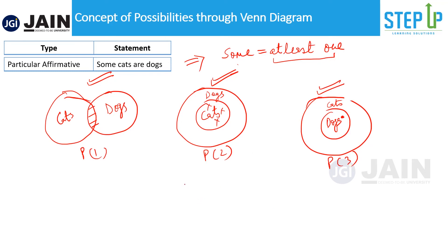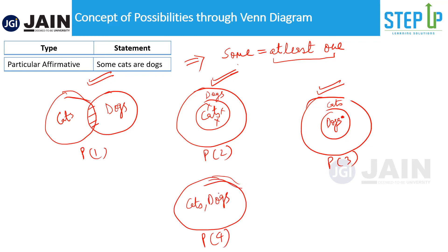There is also a fourth possibility — the extreme case where cats and dogs are the same circle, meaning cats equals dogs. This also satisfies the condition because at least one cat is a dog. So for the particular affirmative statement, there are four types of diagrams — four possible cases.